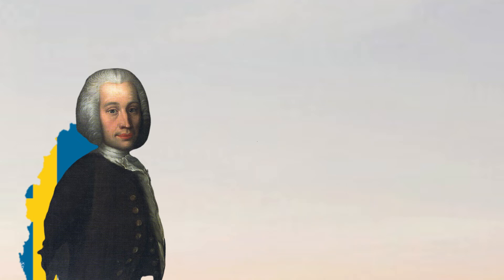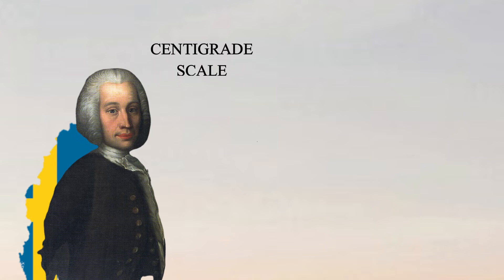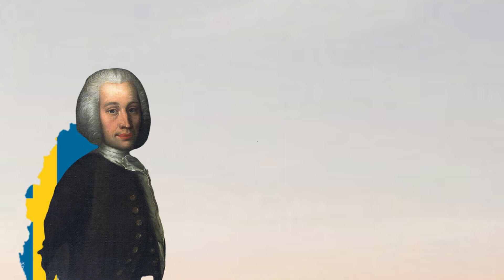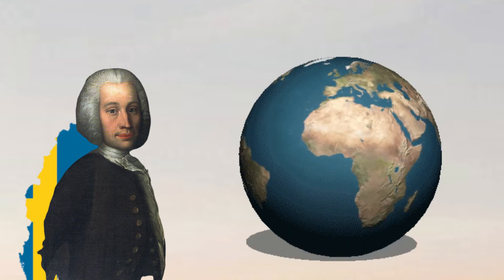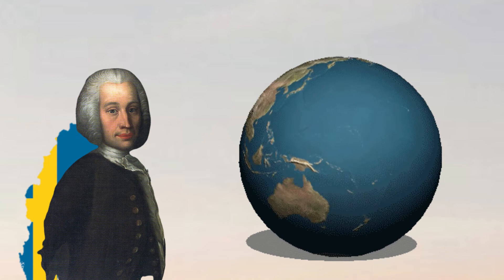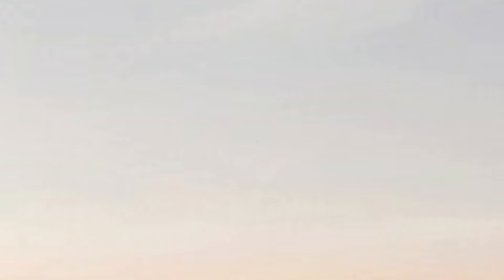After Celsius's death, the centigrade scale was renamed to the Celsius scale, and the freezing point of water was set at 0 degrees and the boiling point of water was set at 100 degrees Celsius. The Celsius temperature scale is commonly used in most countries of the world other than the United States.